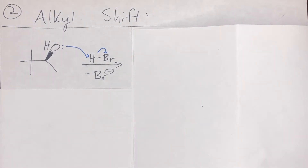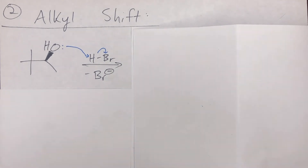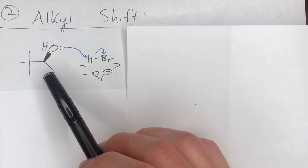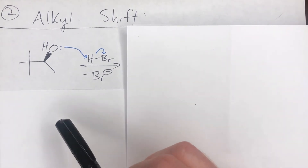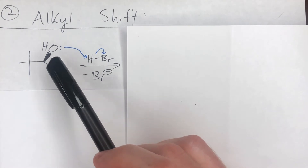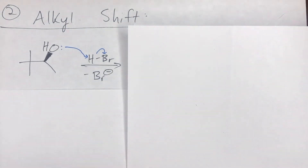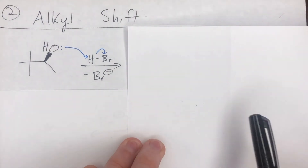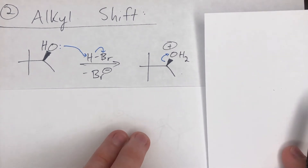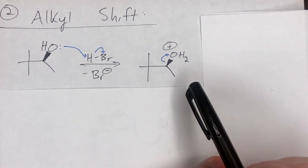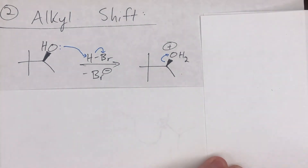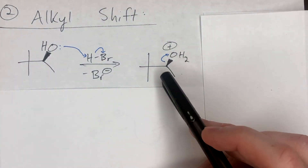The next major type is the alkyl shift, which is very similar to the hydride shift except that both electrons move from a carbon–carbon bond instead of a carbon–hydrogen bond. To give an example, I'm showing another alcohol SN1 reaction proceeding through dehydration. The initial step is just the Lewis basic oxygen attacking the Lewis acidic hydrogen of HBr, protonating the OH to water and losing Br⁻.